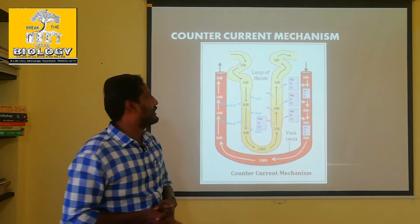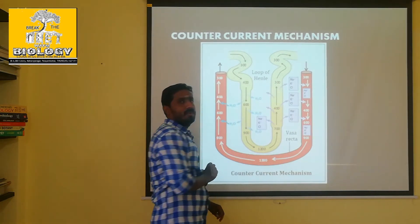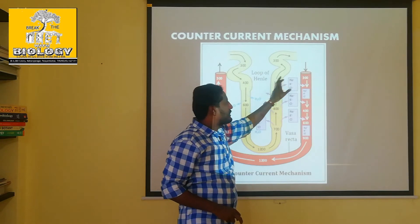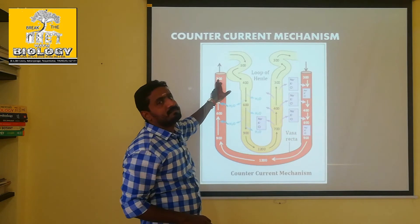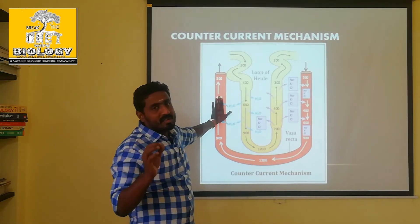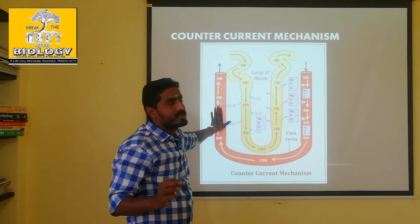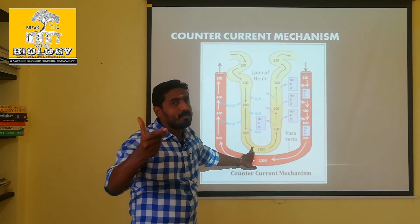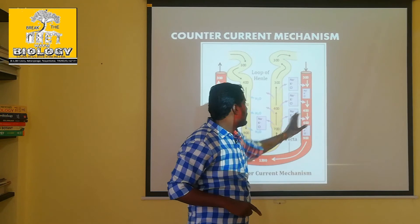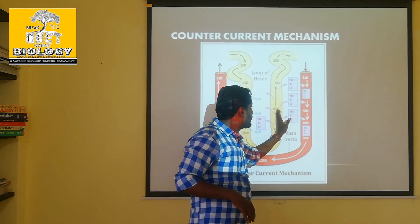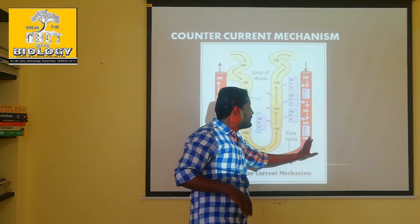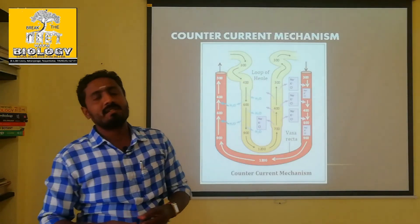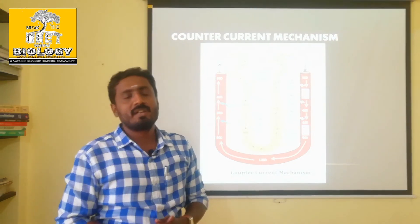This is the counter-current mechanism — it moves in the opposite direction. Urine flow or the renal filtration flow goes in one direction, while blood in the blood vessels goes in the opposite direction. H2O moves in this counter-current direction. This counter-current mechanism helps overcome dehydration in our body.